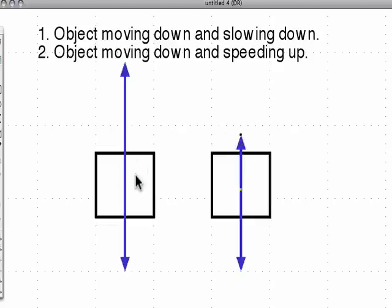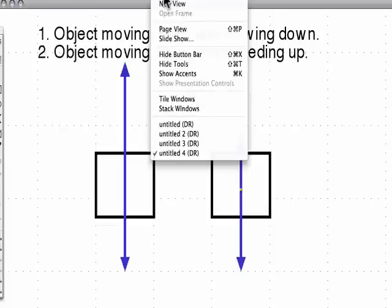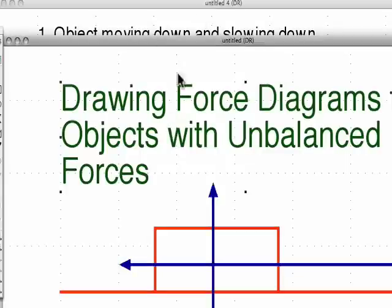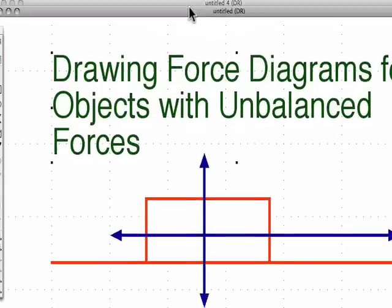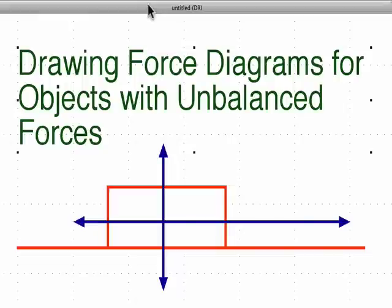So there we go. Here, this one is going down but slowing down, and this one is also moving downward, but because the downward force, the gravitational force, is greater, it's speeding up. I think that covers most of the general cases. You can apply the cases I just showed you to all the cases that we talk about in class for the most part. And that brings us back to the title, Drawing Force Diagrams for Objects with Unbalanced Forces. Thank you very much.